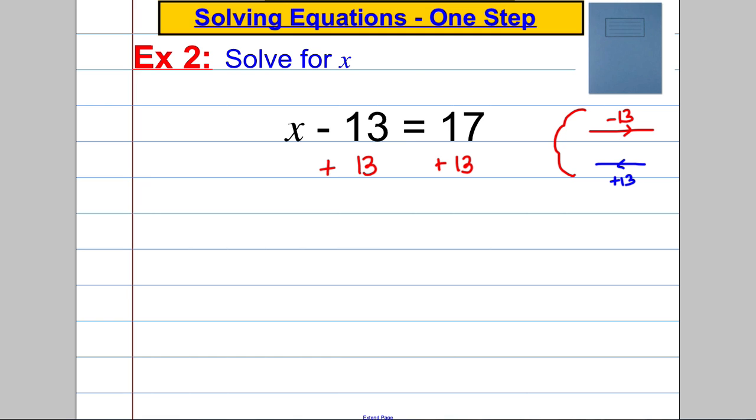Put a line underneath and work out what that turns out to be. So we'd have x is still left here. Negative 13 add 13 is 0. Your equals is lined up perfectly. And 17 add 13 is equal to 30. And finally, check your answer. 30 subtract 13 is indeed 17. I know I've done it right.